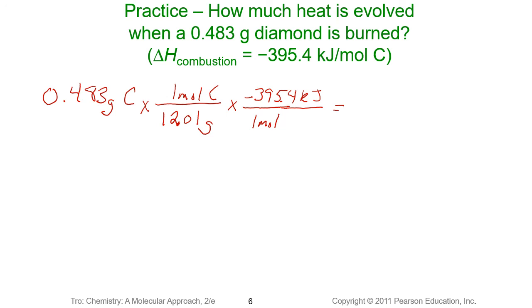So multiplying across the top, dividing by anything on the bottom, we get negative 15.9 kilojoules of heat produced from burning our diamond.